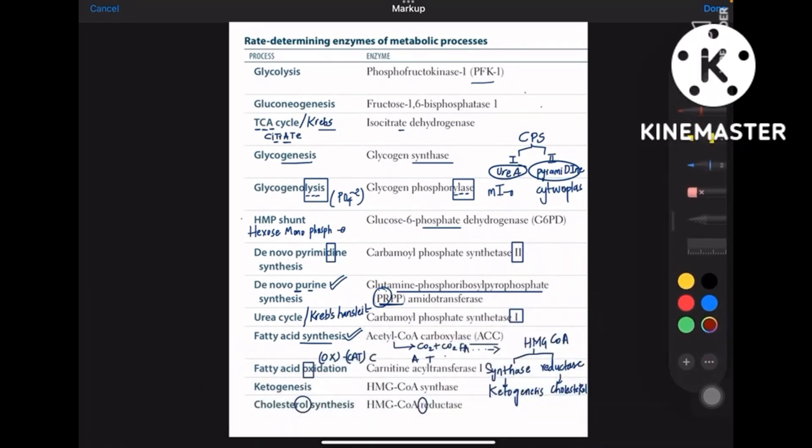I have got mnemonics for many cycles except for the first and second ones, because glycolysis and gluconeogenesis are most frequently learned, so there is no mnemonic for that. But I have got mnemonics for the rest.